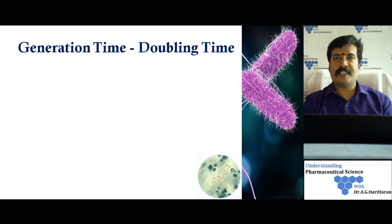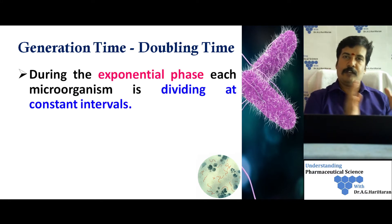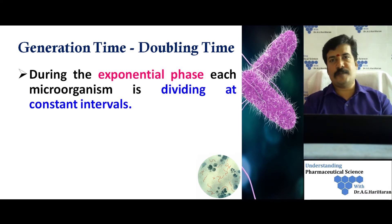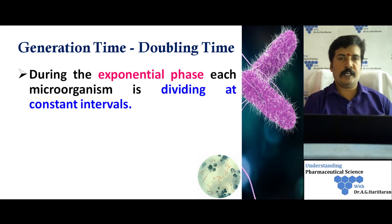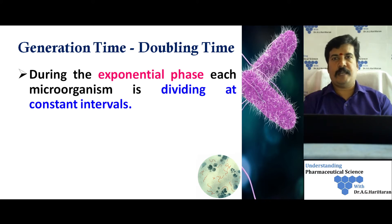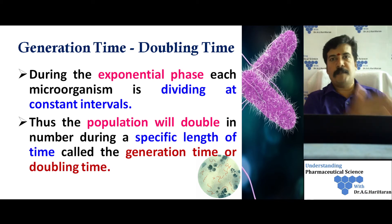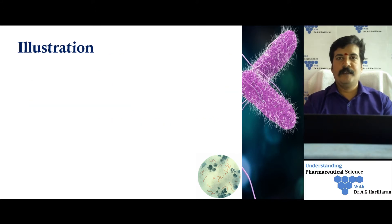The mean generation time — also called generation time or doubling time — is calculated in the exponential phase of the bacterial growth curve. During the exponential phase, the microorganism divides at a constant interval of time, meaning the population of microbial cells doubles every specific interval of time. This specific interval of time is called the generation time or doubling time.